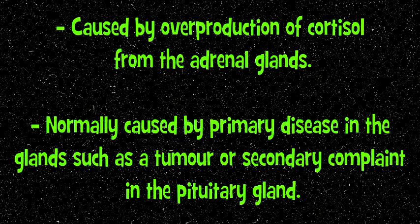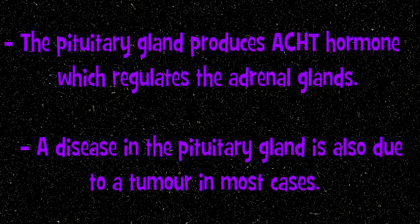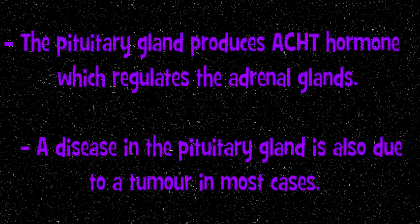What is Cushing's disease? Cushing's disease is caused by overproduction of cortisol from the adrenal glands. It is normally caused by primary disease in the glands such as a tumour, or secondary disease in the pituitary gland. The pituitary gland is part of the brain and produces ACTH hormone which regulates the adrenal glands. A disease in the pituitary gland is also due to a tumour in most cases.